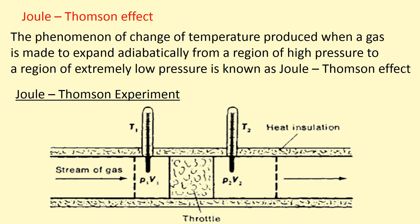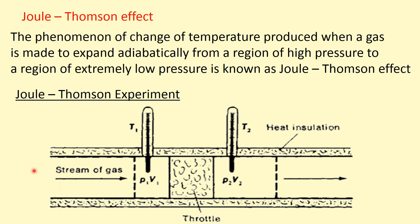Now what is the Joule-Thomson effect? When a gas is allowed to pass from a high pressure area to a low pressure area adiabatically — that means under insulated condition — then a change in temperature is observed in the gas, and this is known as the Joule-Thomson effect.